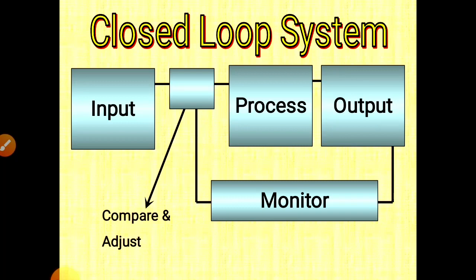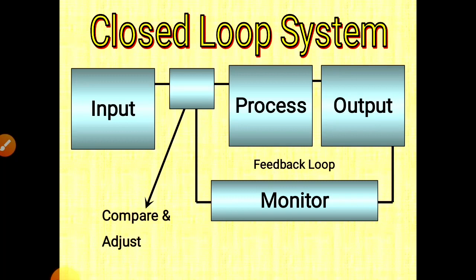Compare and adjust action takes place, and this entire process is called a feedback loop. Here comparison takes place, that is why it is called a feedback loop.